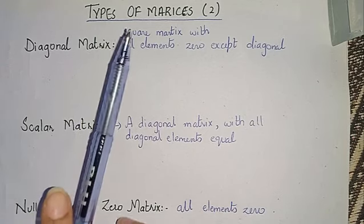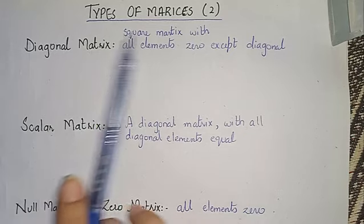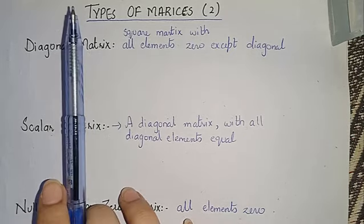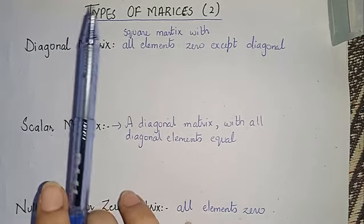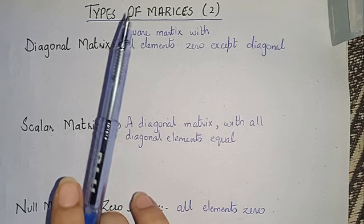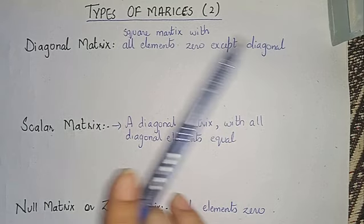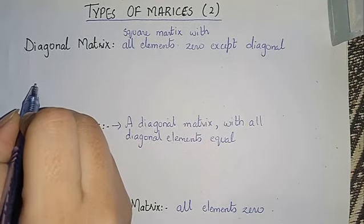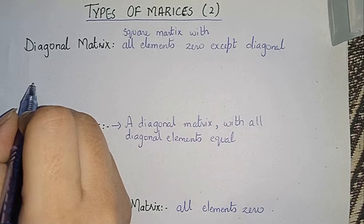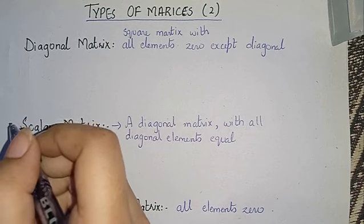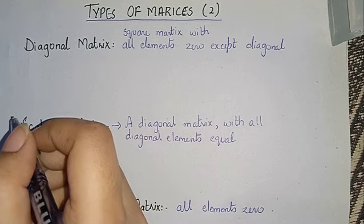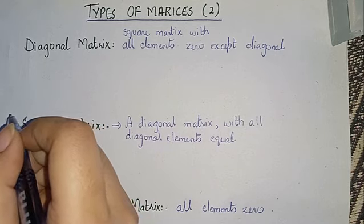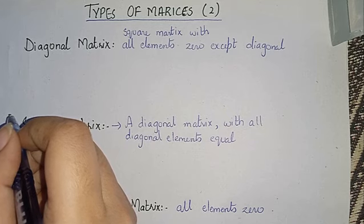First, you should know what a square matrix is — I discussed it in the previous video. Rows and columns are equal. If you haven't seen the previous video, I am sharing the link in the description as well as in the cards, so you can check it from there.